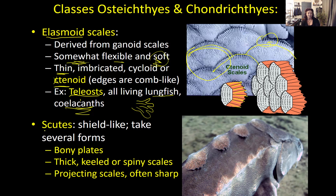Scoots are large, thick, shield-like scales. They can take several forms: bony plates, thick and keeled (meaning they have a ridge in cross section), spiny with points, or they can project off the body into spines like what you see on a lionfish.